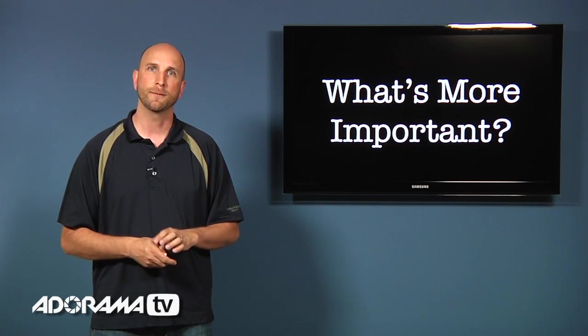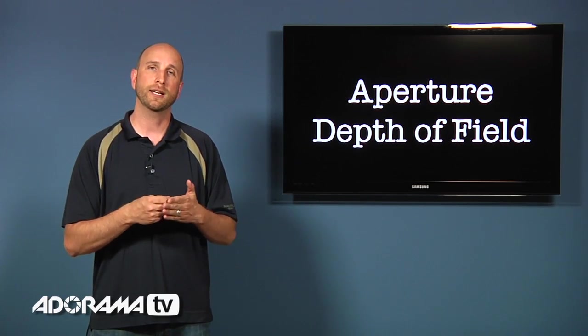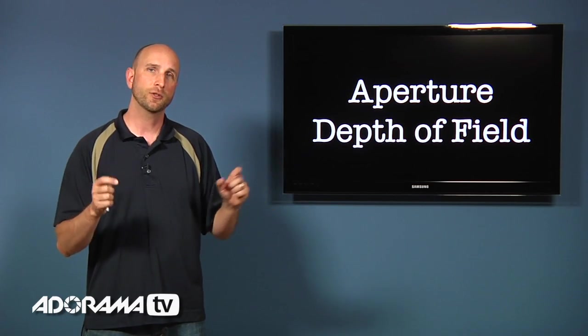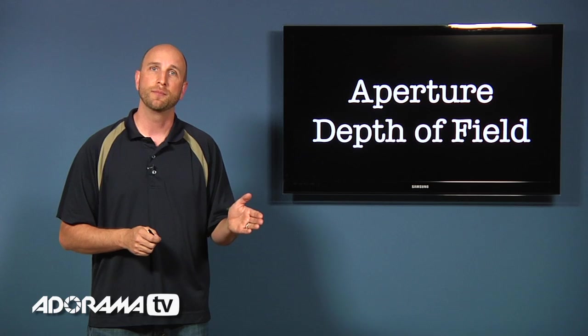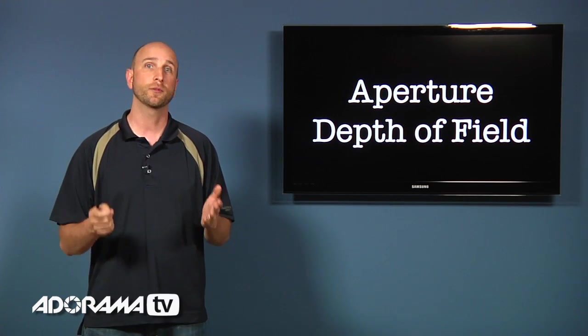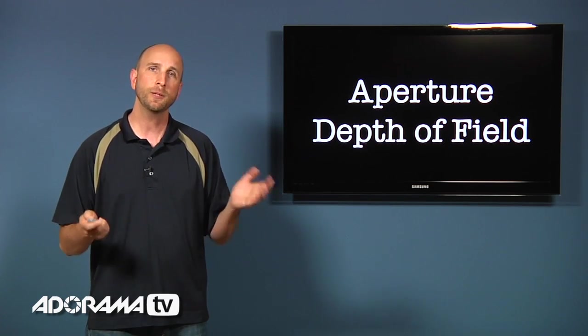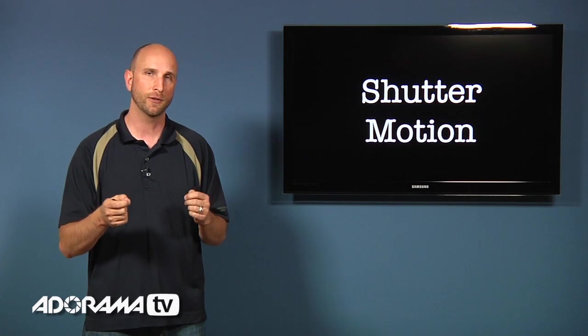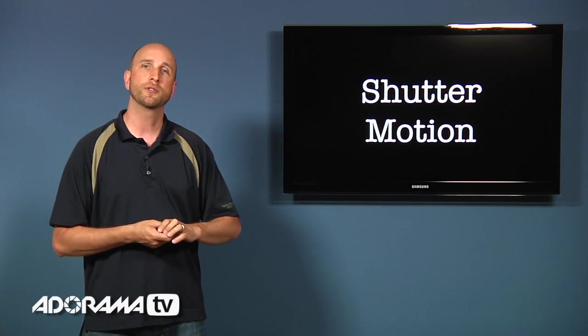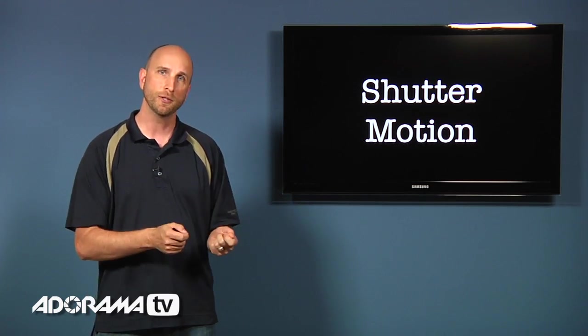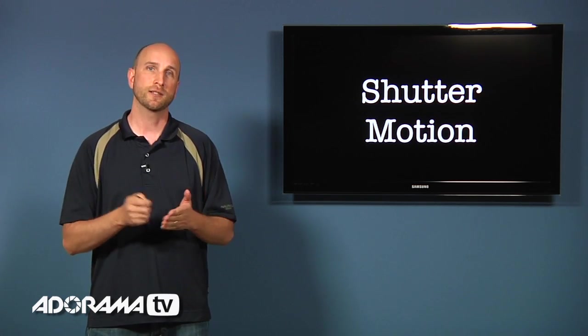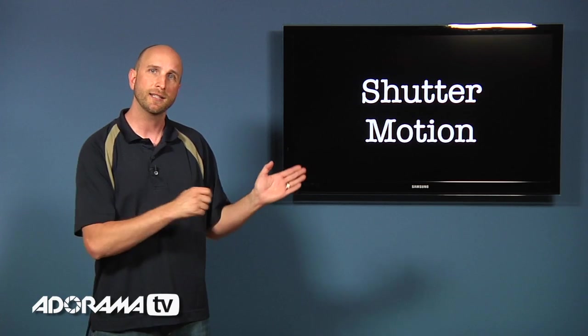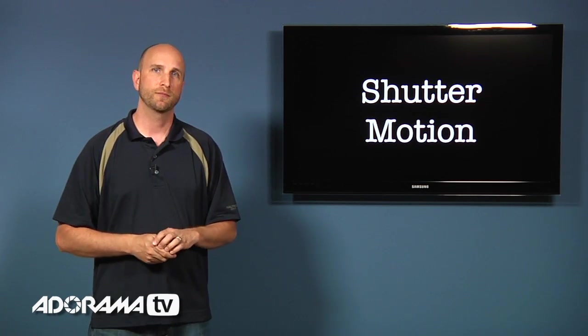For those people that really care about depth of field and controlling what's in focus in their images, well aperture is most important. So you can watch episode 12 for more information about depth of field. And for people that are shooting sports or action photos, well shutter is going to be most important because it controls motion. Now you can check out episode 15 where we talk about using a slower shutter speed and the panning technique to get some great sports photos.